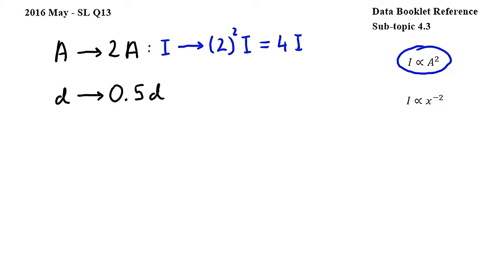Next, let's look at the effect of halving the distance using this relationship, also from subtopic 4.3, where I is intensity and X is distance. In this expression, we can rewrite the negative exponent as 1 over X squared.